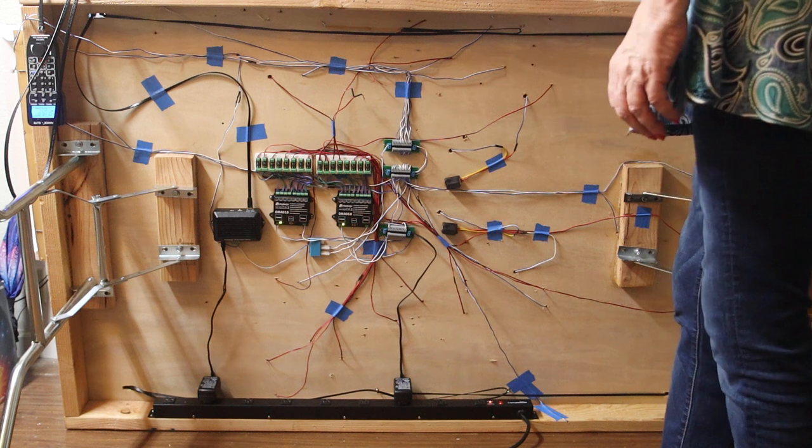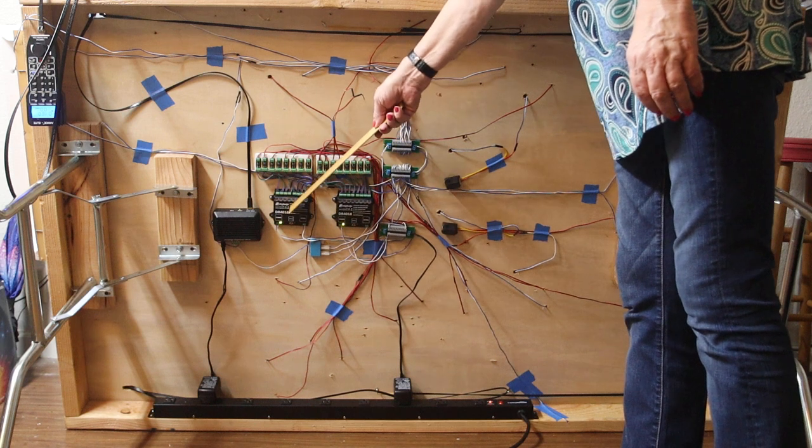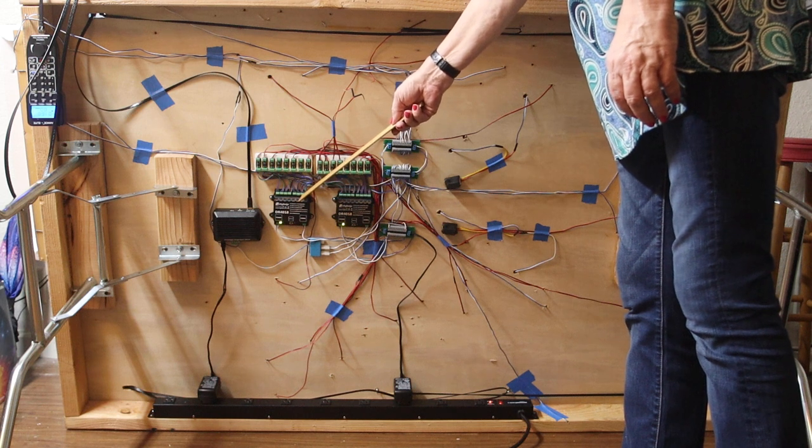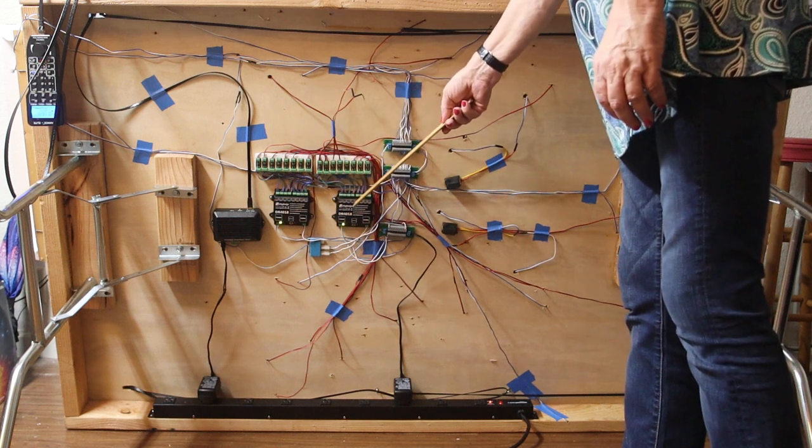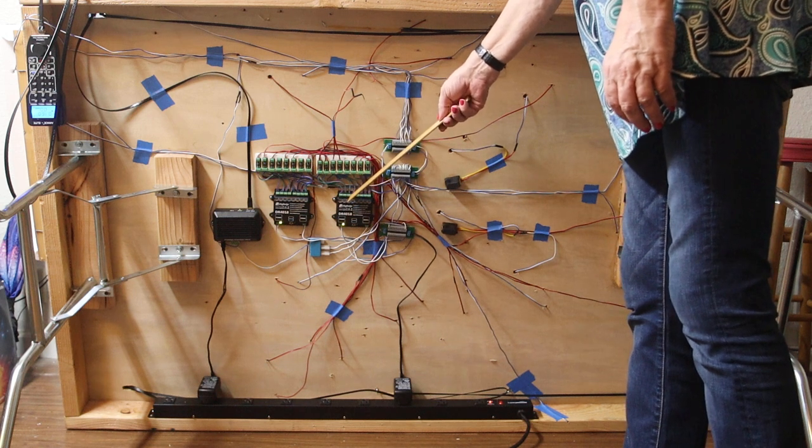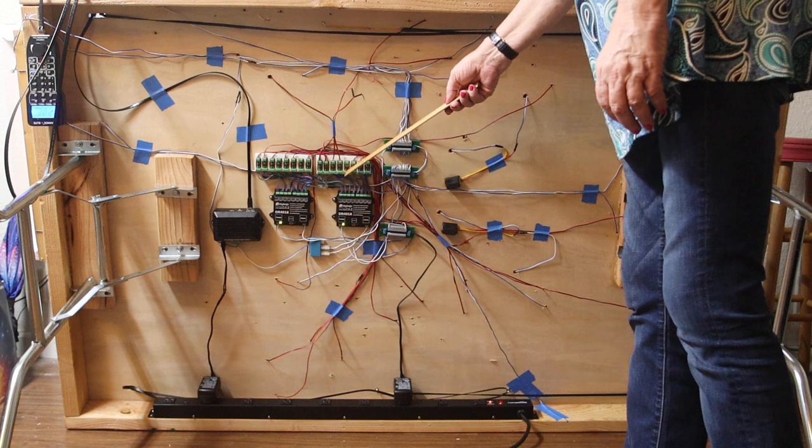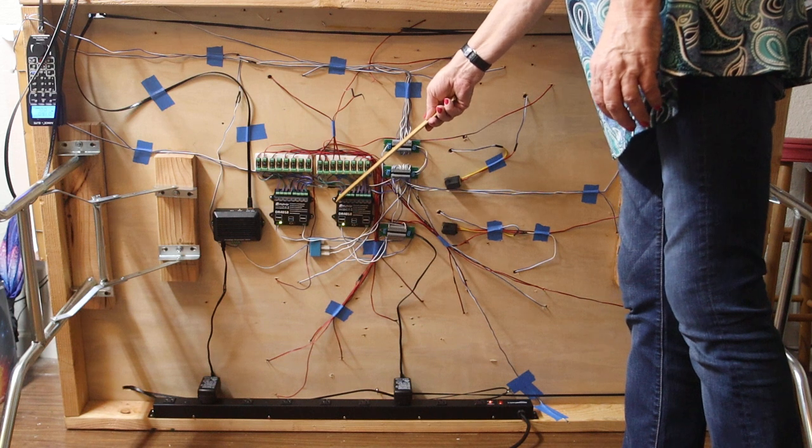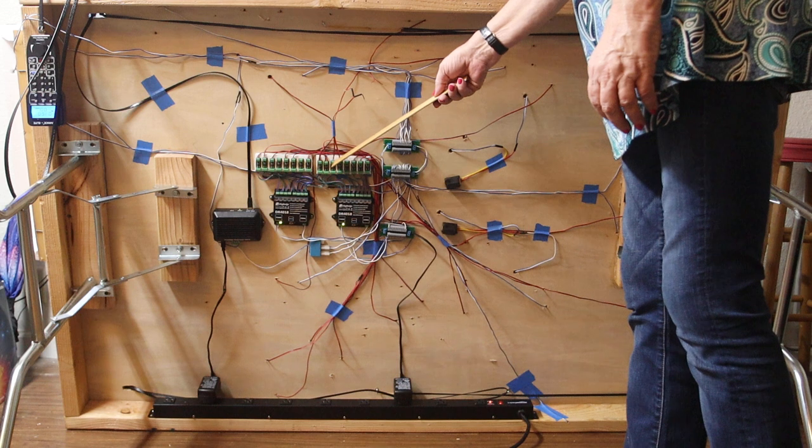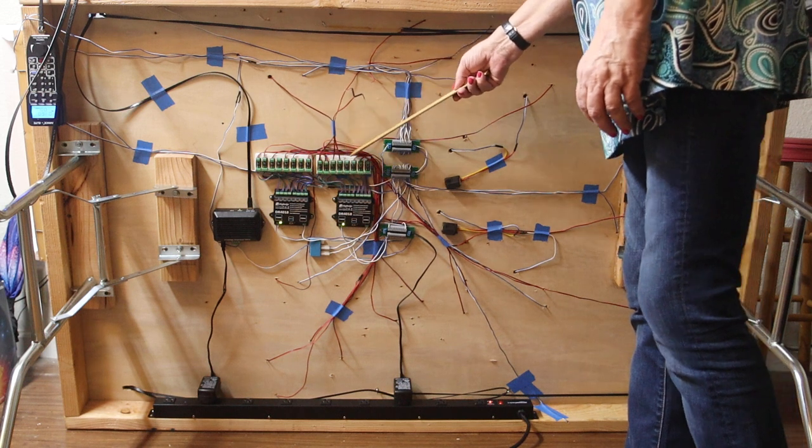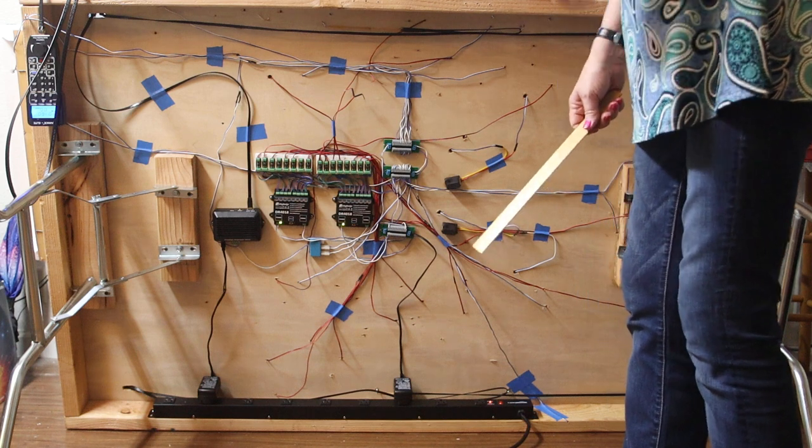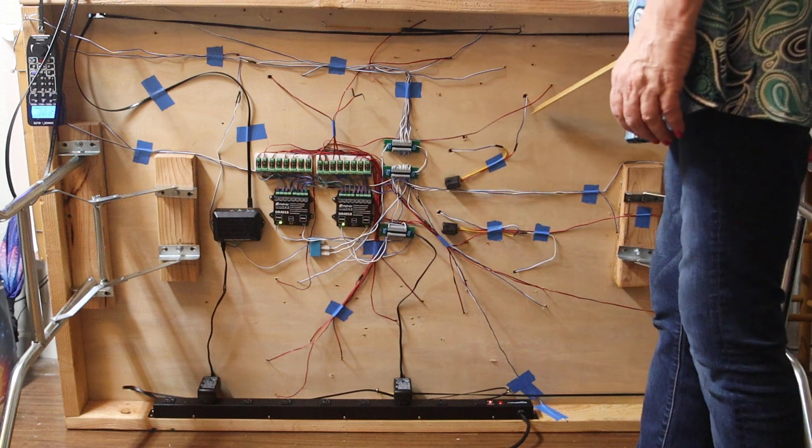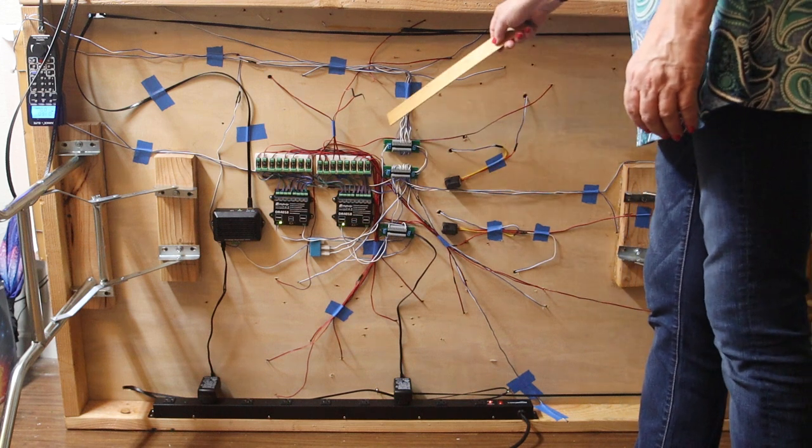The other thing that you can see here is these two are Digitrax switch controllers. They can control eight Kato switches each. They go from each one of these ports, goes through an adapter. The adapter takes the three wires on the Digitrax controller and routes it through this, which converts it to the two wires that are for the Kato switches. And so that's all the red and black wires that you see here are wires that are going to the Kato switches.